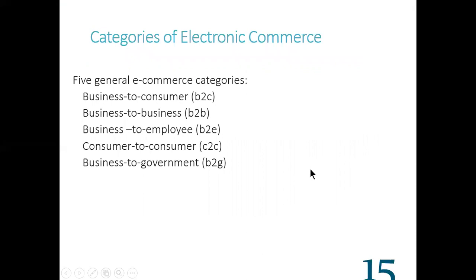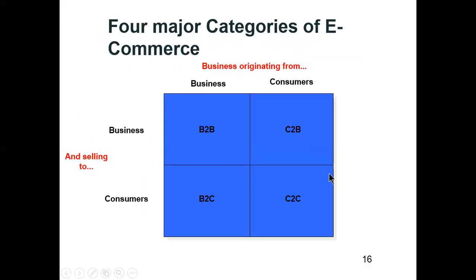Now, what are the categories of e-commerce? There are five categories: business to consumer (B2C), business to business (B2B), business to employee, business to consumer, and business to government. Looking at the four major categories from the diagram: B2C, C2B, B2C, and C2C are the common e-commerce categories.